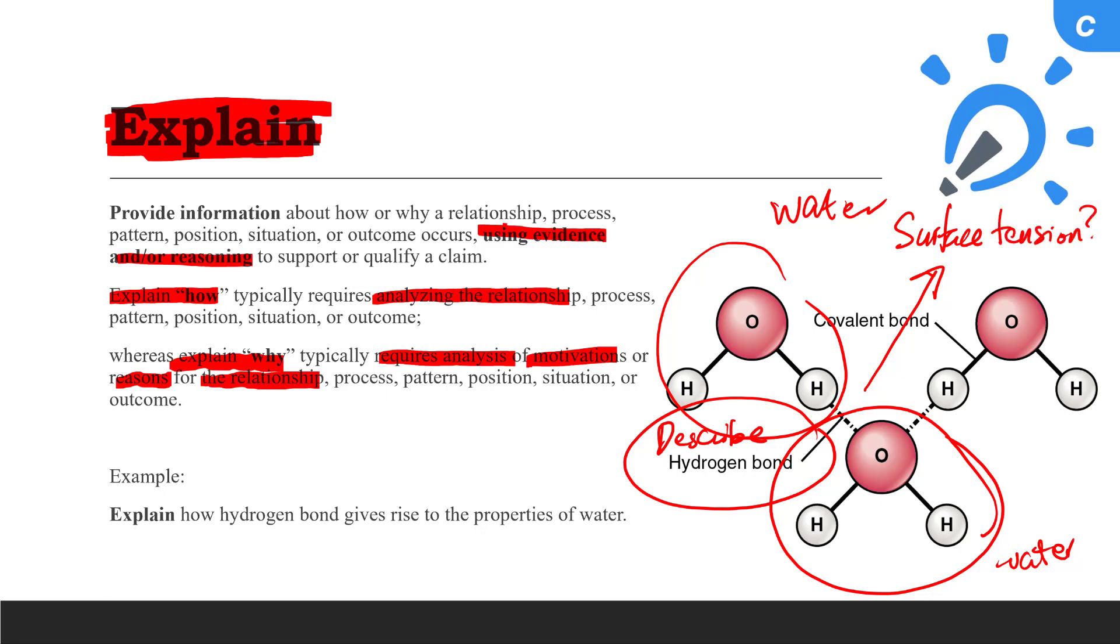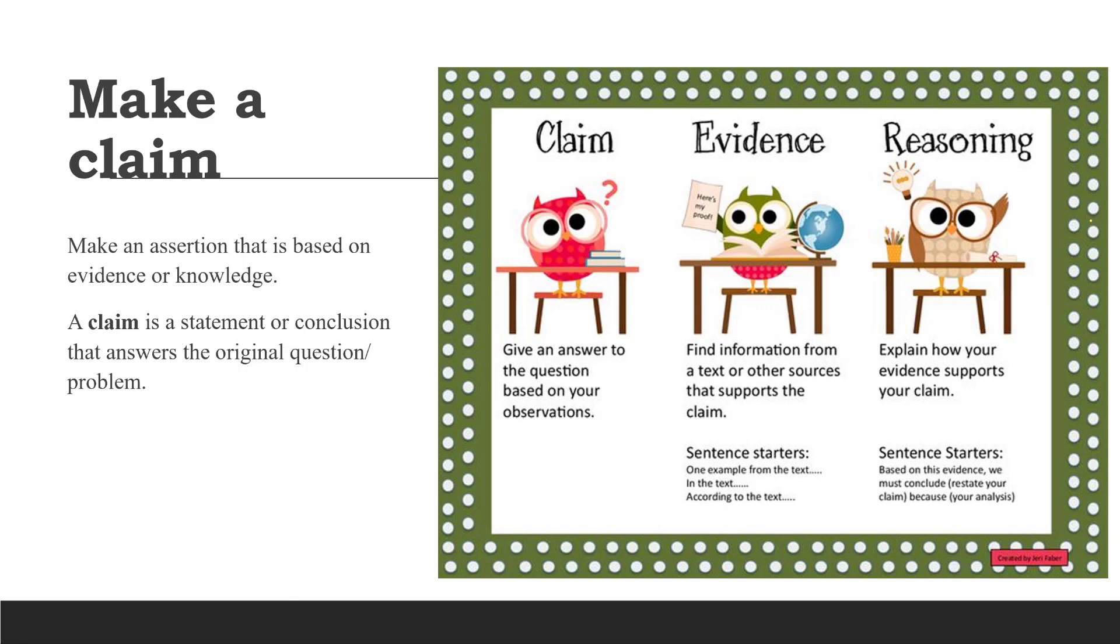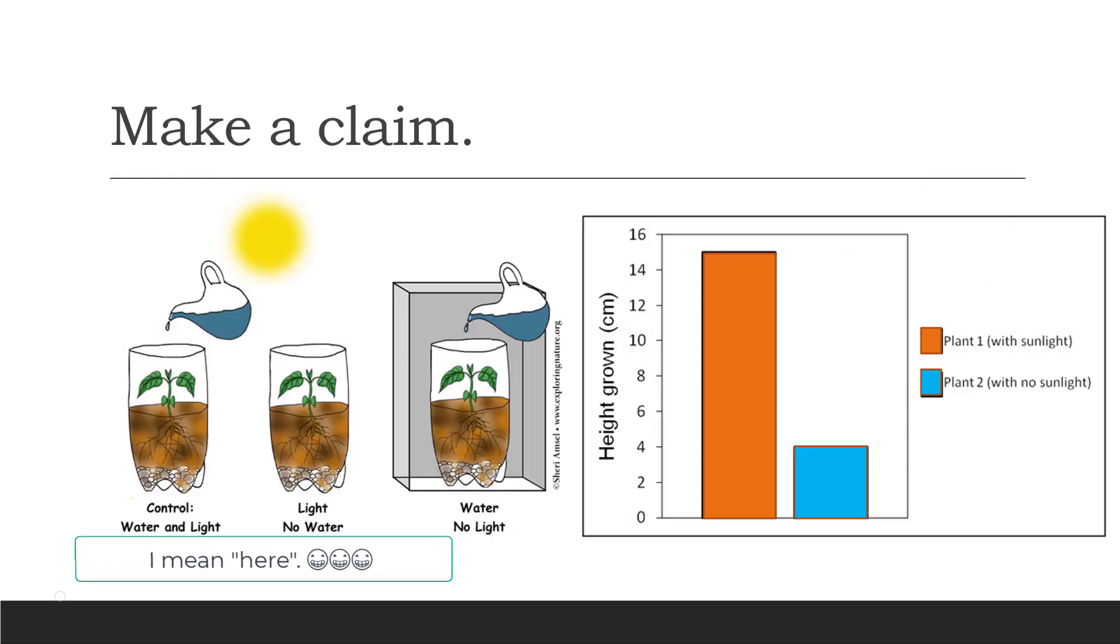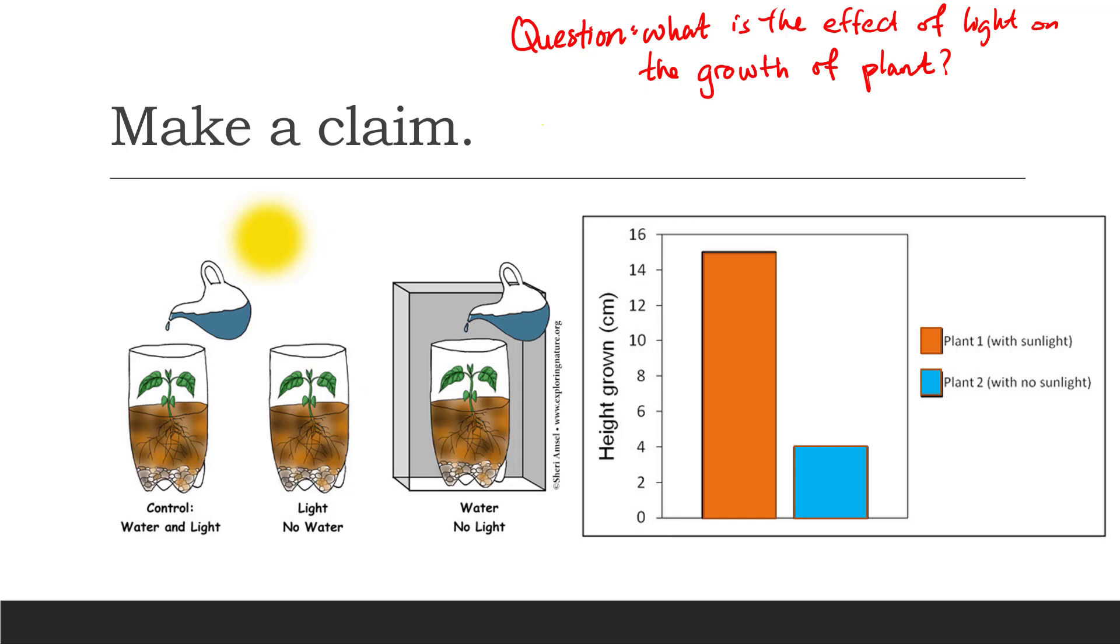Here we are. Make a claim. A claim is a statement or a conclusion that answers the original question or problem. So, making a claim means provide a statement or conclusion based on the evidence or reasoning. A claim needs to answer the questions that was asked at the very beginning of the experiment. Here, if we were to do this experiment and collect some data, what claim can we make then? The question to this experiment is, what are the effects of light towards the growth of the plant? Then, we can claim that plants need sunlight to grow to an optimal height. Remember, claim is made based on evidence or reasoning. I can't just make a random claim with no basis.